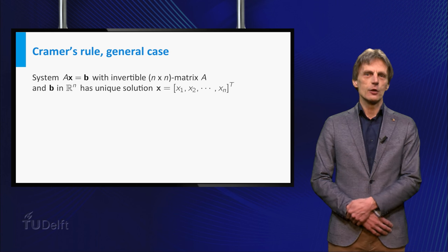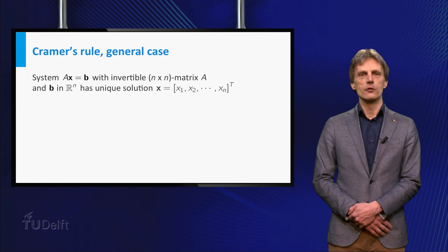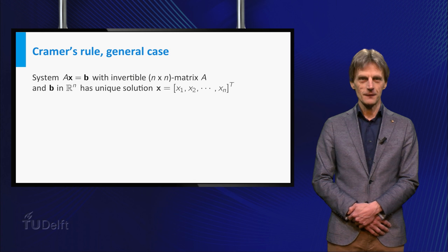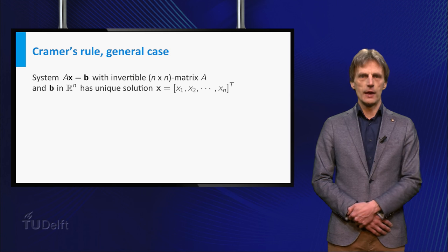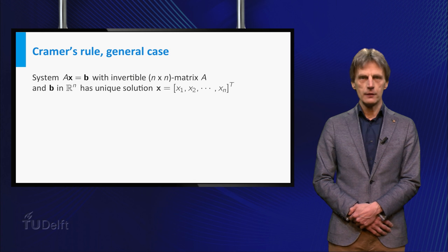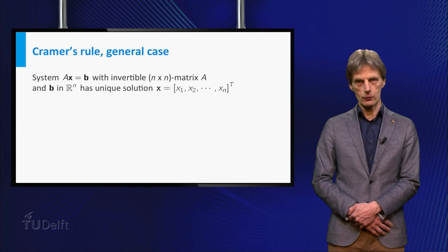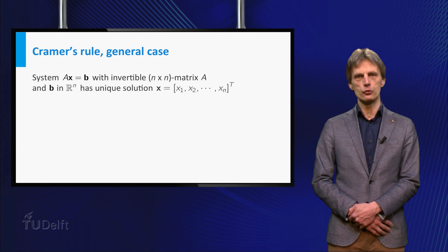Now let's conclude this video with the description of Cramer's rule for the general case. Let A be an invertible n by n matrix. Then for each vector b in R^n the system A times x is equal to b has a unique solution x.